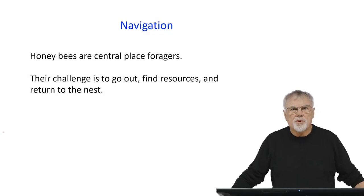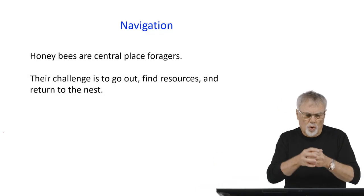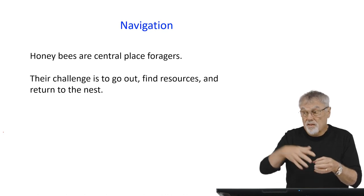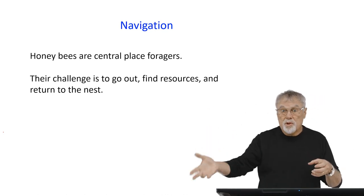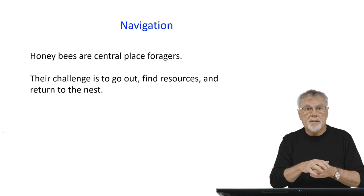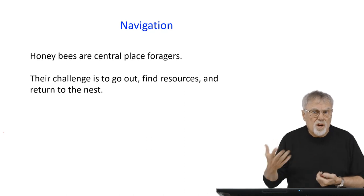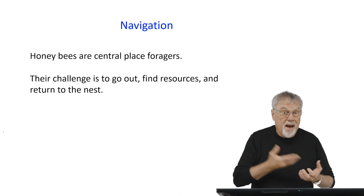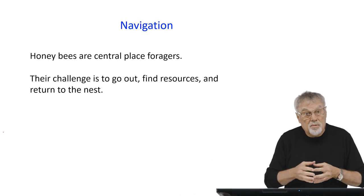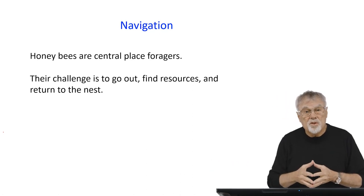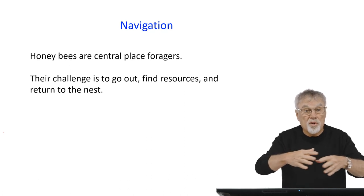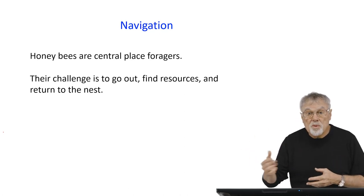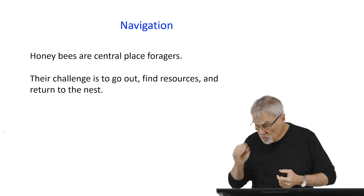Honey bees are central place foragers. That means they forage from a central place, their nest. They go out, gather resources, and return those resources back to the nest. Their challenge is to find resources, navigate back to the nest, and then communicate those locations to their social partners, their nest mates, so that they may also be able to go out and exploit those resources.